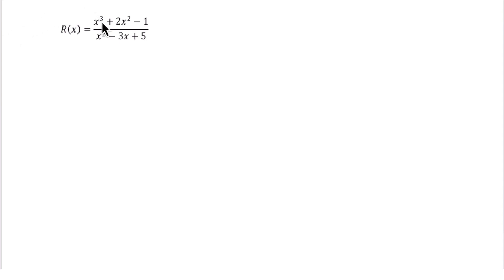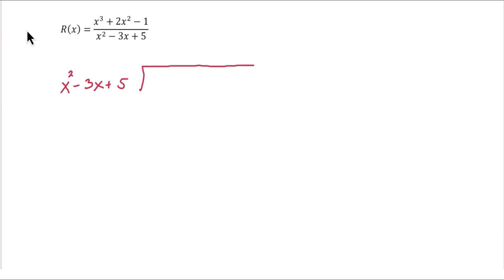In our next example, we are again finding the oblique or slant asymptote. Notice that the degree of the top is one more than the degree of the bottom — that's what indicates we need to find the oblique. We need to use long division this time because the denominator, x squared minus 3x plus 5, is not linear, so we can't use synthetic division.